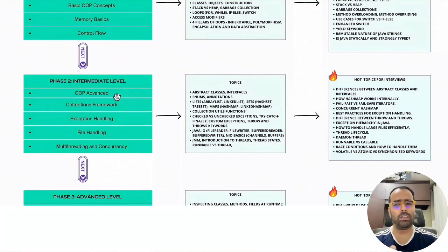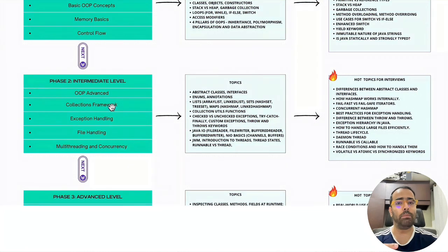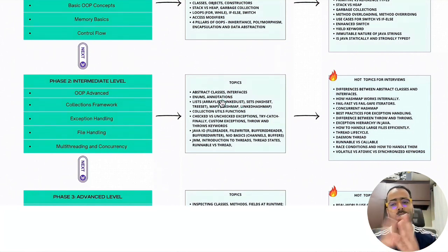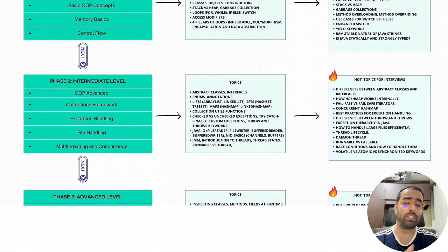Next is the Collections Framework. We all need to store data, so the Collections Framework plus collection utility methods covers how to store data in lists, sets, or maps, and provides functions for sorting, shuffling, and copying between collections. This all falls under the Collections umbrella framework.